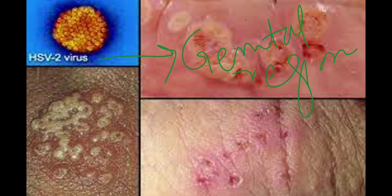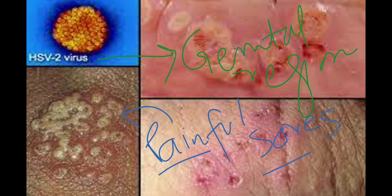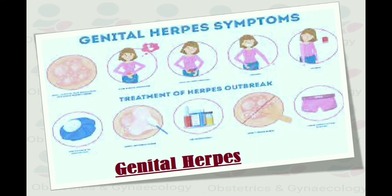HSV2 causes herpes genitalis — genital herpes — meaning there are painful sores in the genital area. Other complications of HSV2 include neonatal encephalitis and other forms of neonatal herpes. HSV2 also causes aseptic meningitis. It is important to note that humans are the natural host for both viruses.